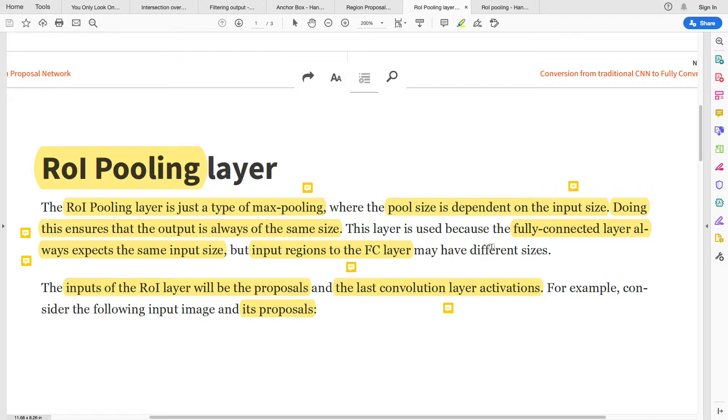The output size, and the reason is the fully connected layer always expects the same input size. Input regions to the FC layer may have different sizes. The inputs of the ROI layer will be the proposals and the last convolutional layer activations.